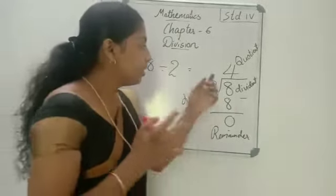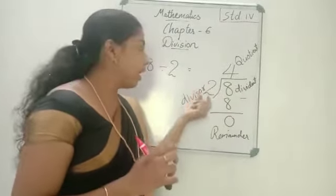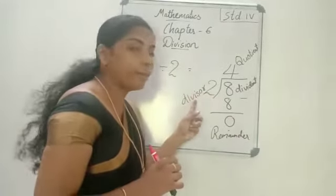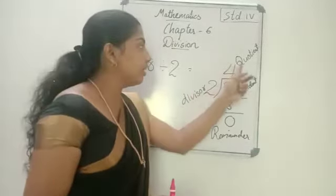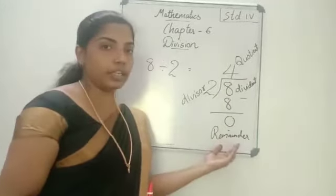And the number we got by subtracting is called the remainder. So this is dividend, divisor, quotient, and remainder. Say it once more. The number we have to divide is called the dividend. And by which number we are dividing, that number is called divisor. The answer we got is quotient. And here this is the remainder.